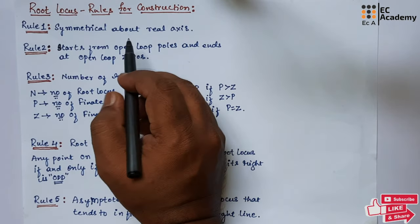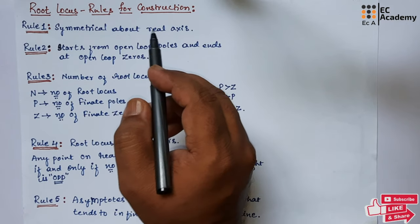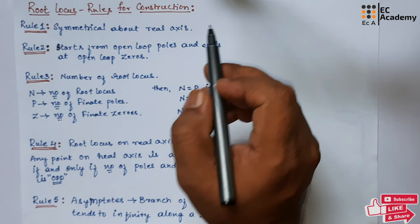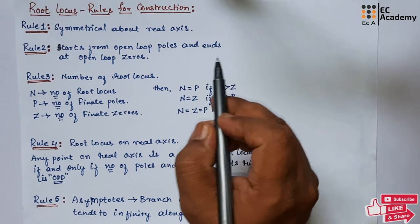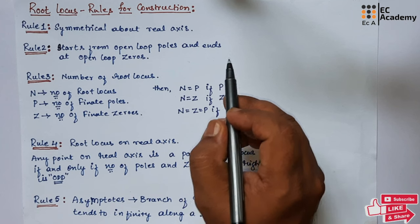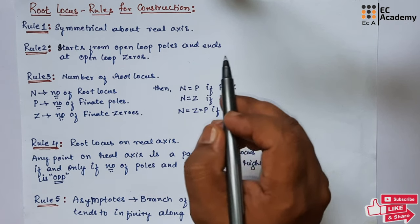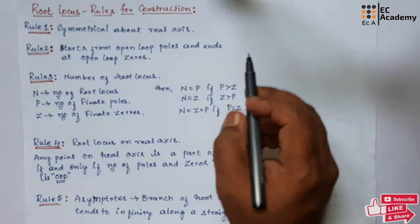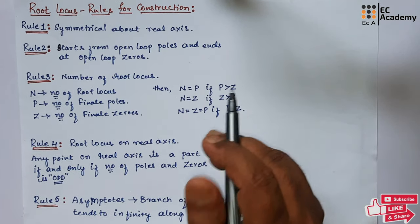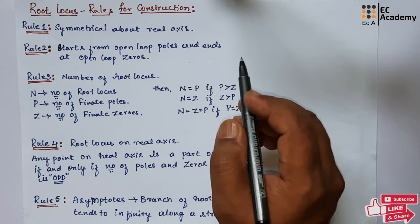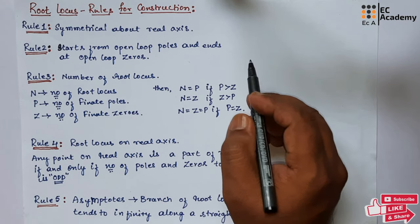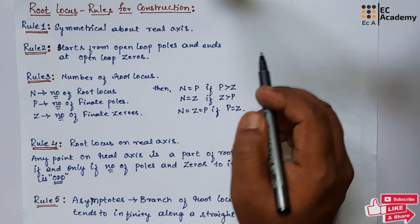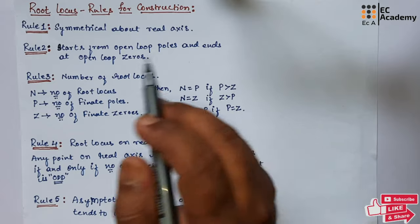Before going to different rules, let us understand what is a root locus. Root locus is a graphical representation in which the roots of the characteristics equations are plotted in S-plane. Root locus also represents the system transient response and stability.